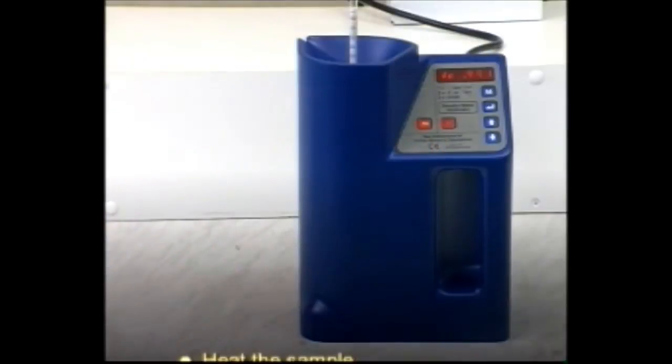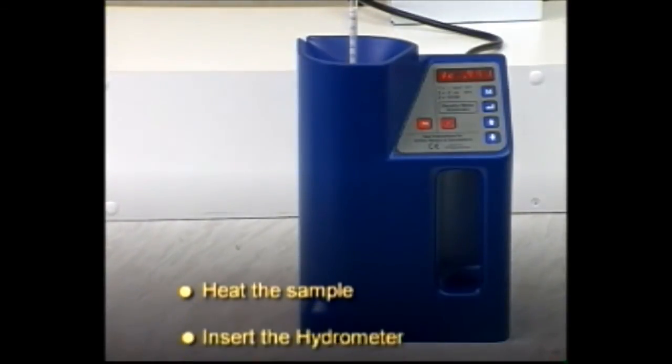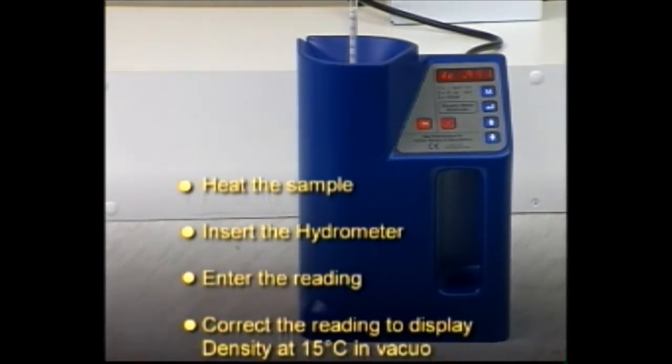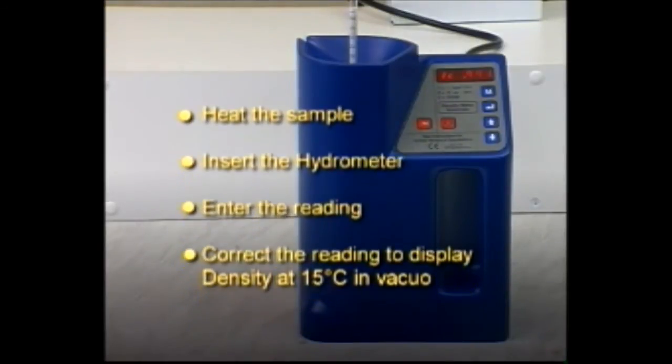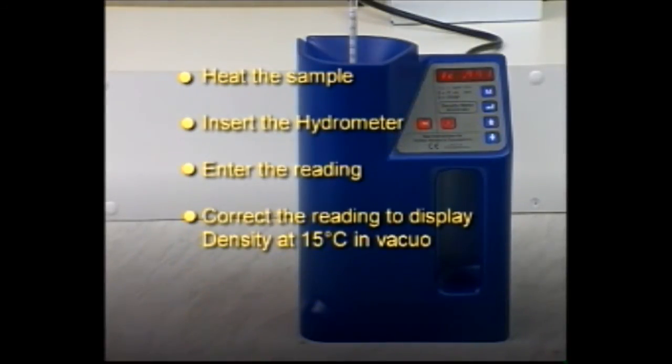To summarize, heat the sample, insert the hydrometer, enter the reading, correct the reading to display density at 15 degrees Celsius in vacuo.